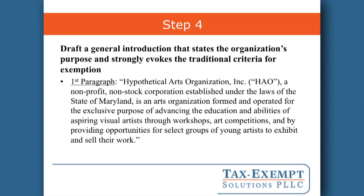Steps one through three were all about research and preparation. Step four will begin the drafting process. You're going to want to start with a general introduction that states the organization's purpose and strongly evokes the traditional criteria for exemption. In this case, we want to focus largely on education and advancing the abilities of aspiring young artists — that's most consistent with the traditional notion of an arts organization.